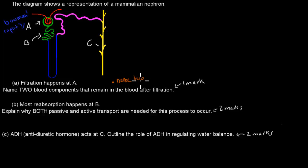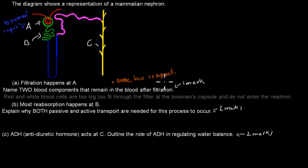So you have to name two of them. You don't have to say why, but I just wrote why that happens as well. And I mentioned the red blood cells and the white blood cells. So what I wrote is red and white blood cells are too big to fit through the filter at the Bowman's capsule and do not enter the nephron.